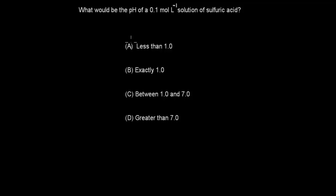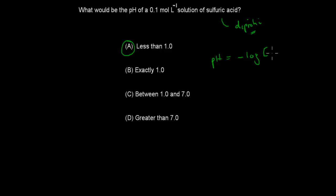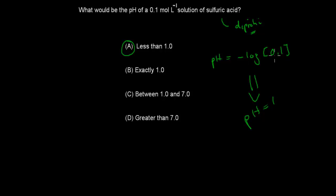Welcome back. The correct answer is A. Same reason as before — sulfuric acid is a diprotic acid, meaning some molecules will release two hydrogen ions. If you calculate pH = −log(0.1), you get pH = 1. But because sulfuric acid is diprotic, some molecules release even more hydrogen ions, making the hydrogen ion concentration higher, which gives a pH of slightly less than 1. So A is correct.